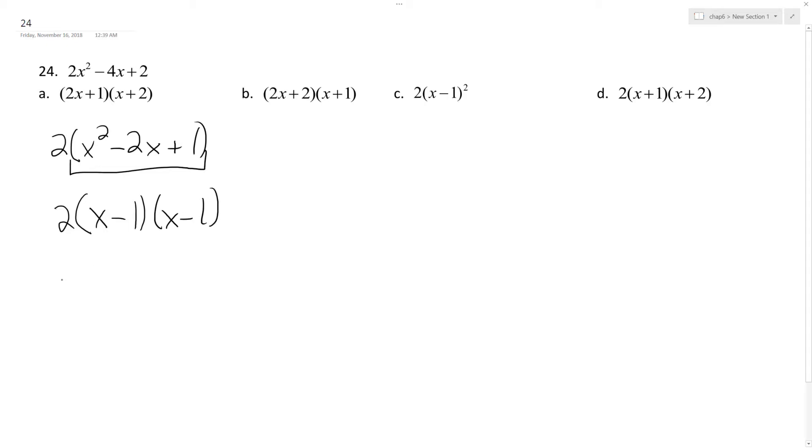The shorthand way of writing this is 2 times quantity x minus 1 squared, which is what we have up here. And what I'm going to do is multiply this out just to prove it.